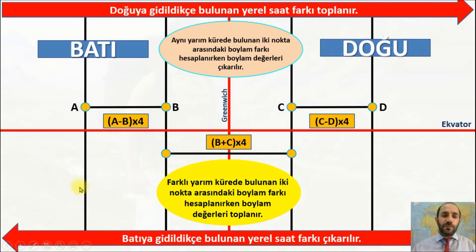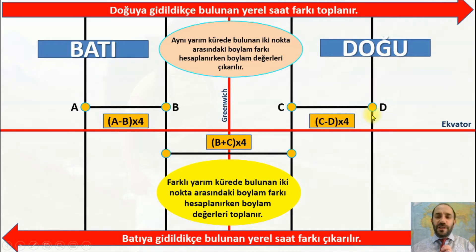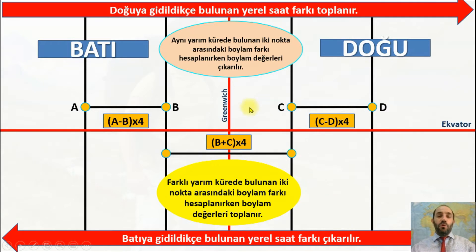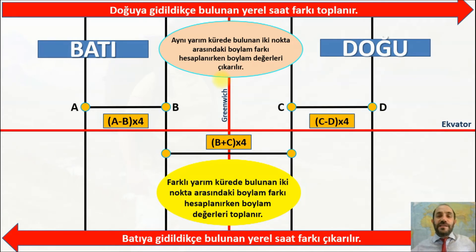Bir şey daha söyleyeyim. Batı yarım kürede A ve B'de, B daha doğuda olduğu için yerel saati ileridedir. Zaman farkını bulduğunuzda sizden B'yi isterse topluyorsunuz. Temel bilgi: ne gelirse gelsin, her zaman en sağdaki (en doğudaki) meridyenin yerel saati ileridedir. Sağdakinin saatini isterse toplayacaksınız, soldakinin saatini istiyorsa zaman farkını çıkaracaksınız.